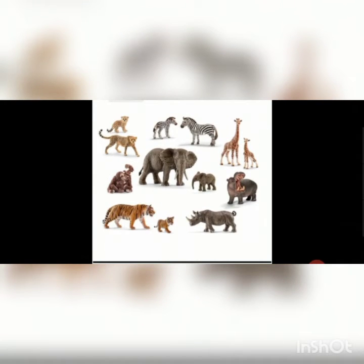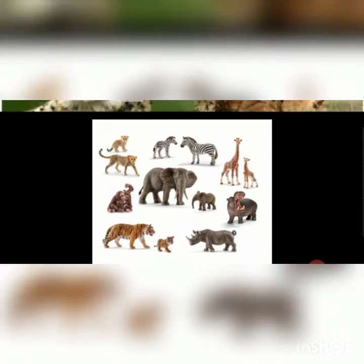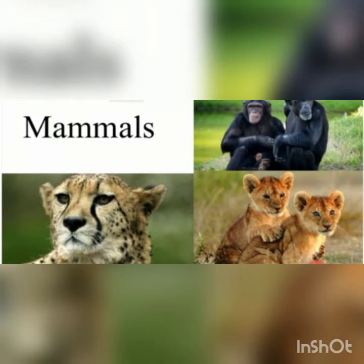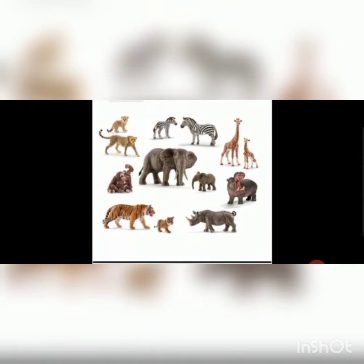Here are some animals — elephant, lion, zebra. Can you tell me what is common among these animals? All these animals give birth to their offspring. The animals that give birth to their young ones are called mammals. So all these animals are mammals.